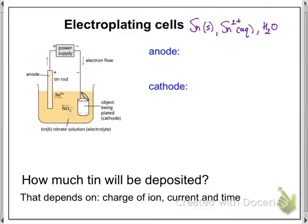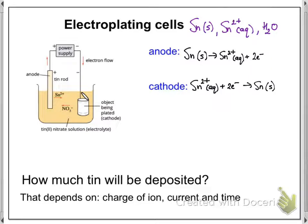At the anode you want the strongest reductant, which happens to be tin. So tin is going to be oxidized into tin 2+ ions. At the cathode you need the strongest oxidant, which also happens to be tin 2+. It's stronger than water. So you get the reduction of tin 2+ ions into solid tin.